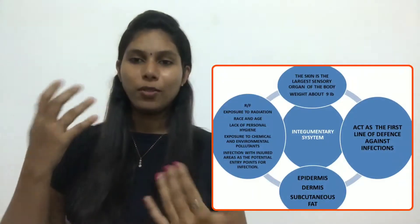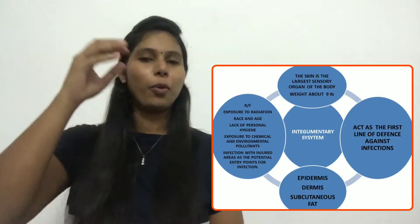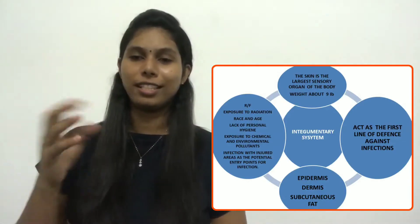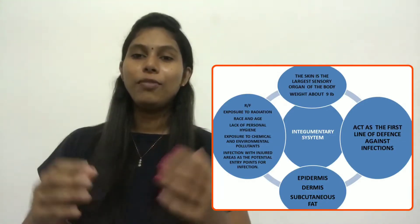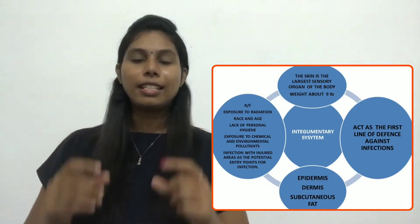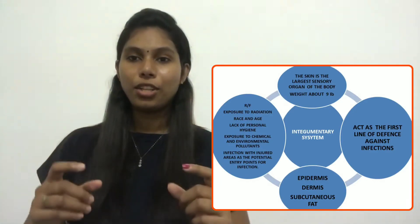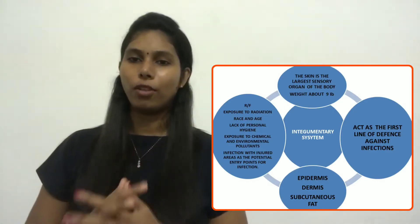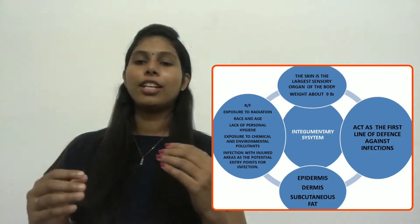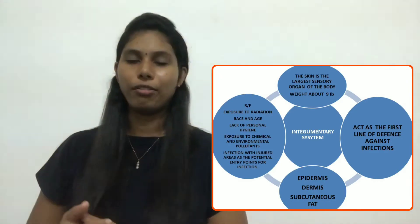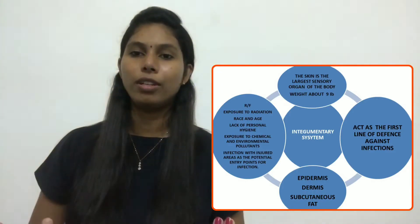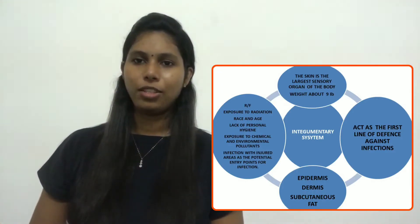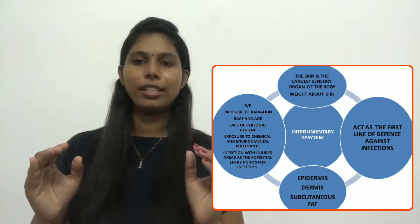What comes to your mind when you hear the word integumentary system? Definitely we know that skin is one of the largest sensory organs of the body, with a surface area of 10 to 20 square feet and a weight of about nine pounds. That is the main thing we should always remember.